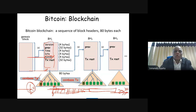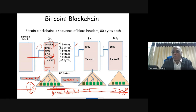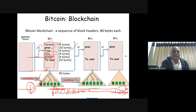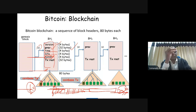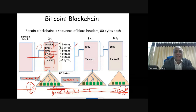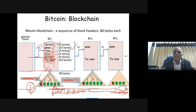The block header structure includes: version (4 bytes), previous hash (32 bytes, i.e., 256 bits), timestamp of when the block was created, bits (the difficulty challenge — the number of leading zero bits required), the nonce, and the transaction root which is the Merkle tree root. The block header is 80 bytes, followed by all transactions.